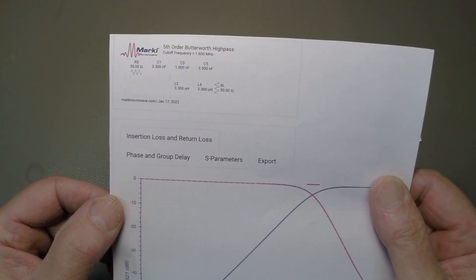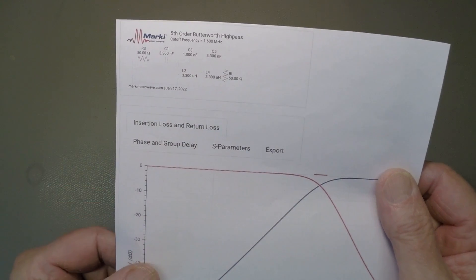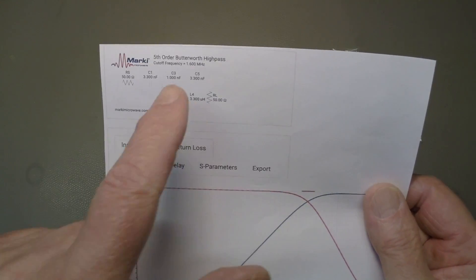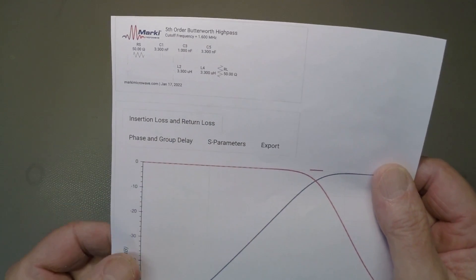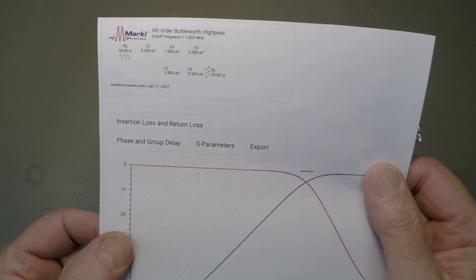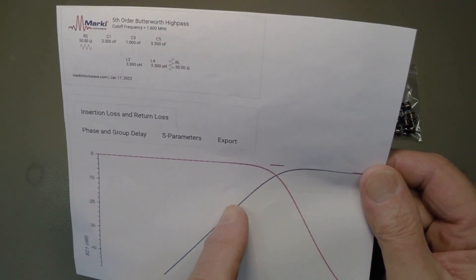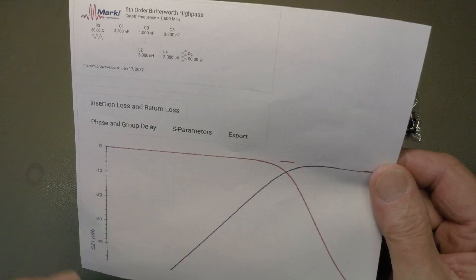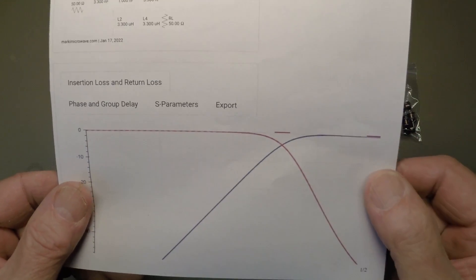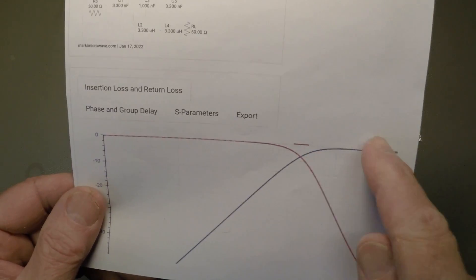It's a pretty straightforward fifth-order Butterworth high-pass filter with a cut-off frequency calculated at 1.6 MHz. And it should give us, by around about 1 MHz, 18 to 20 dBs of attenuation. So it's a high-pass filter.